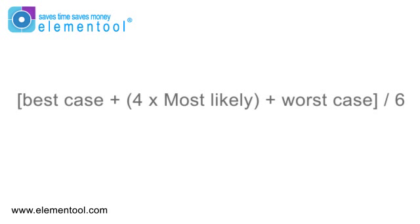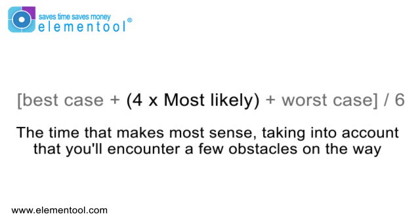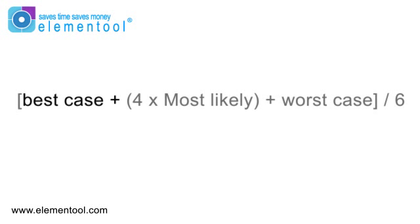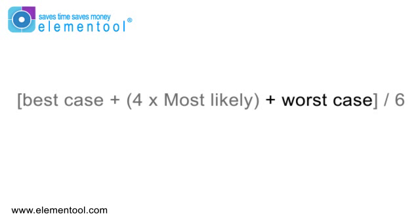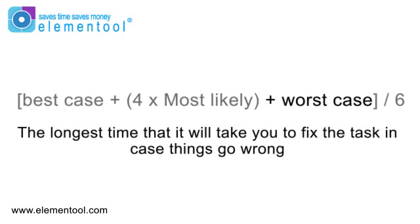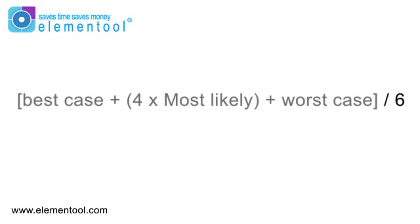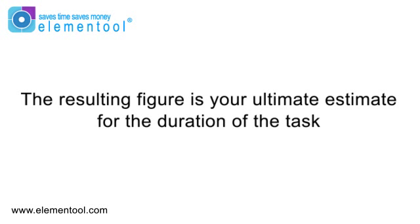The formula goes like this. Multiply the most likely amount of time that it will take to finish the task by 4. This is the time that makes most sense, taking into account that you'll probably encounter a few obstacles on the way. Then add your best case scenario time — the fastest that you can complete the task if you have everything that you need and everything goes according to plan. Now add your worst case scenario time — the longest time it will take in case things go wrong. Sum it all up and then divide by 6. The resulting figure is your ultimate estimate for the duration of the task.